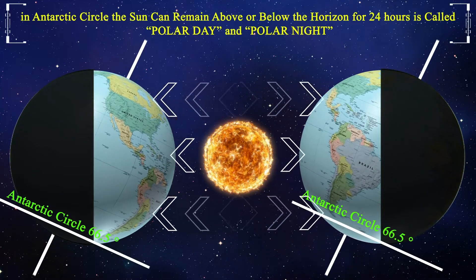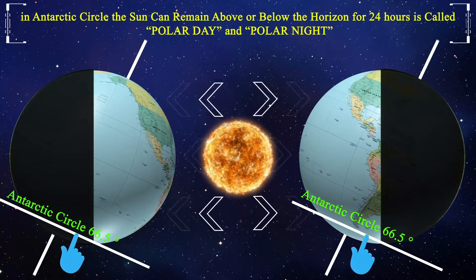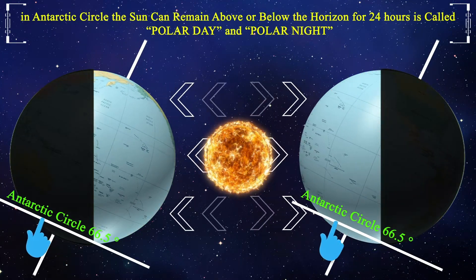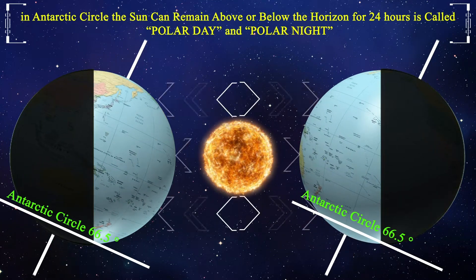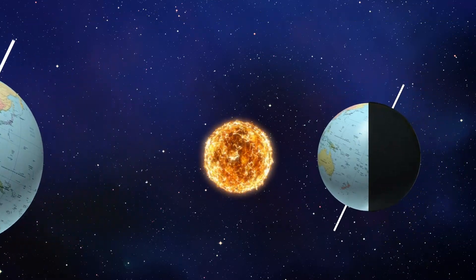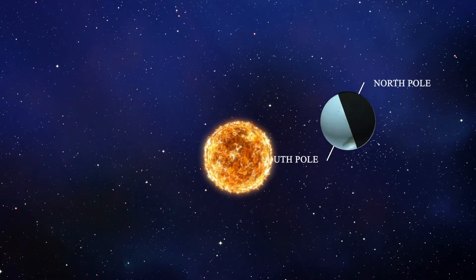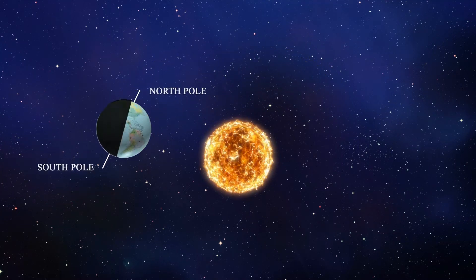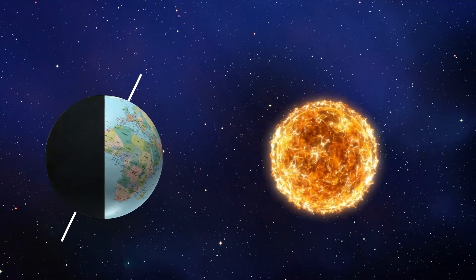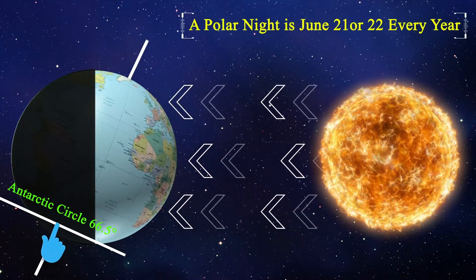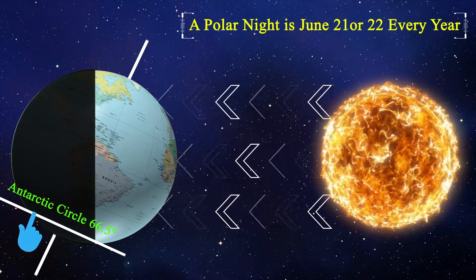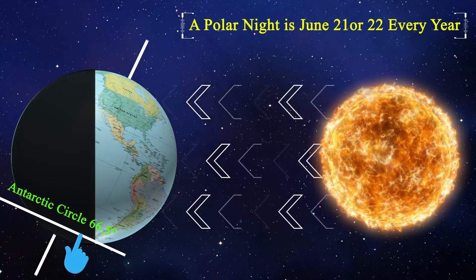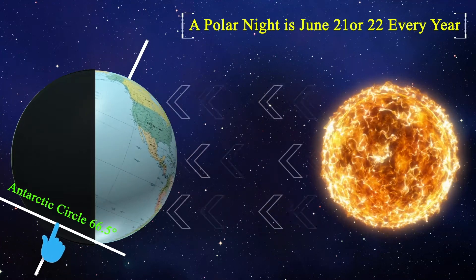In the Antarctic Circle, the sun can remain above or below the horizon for 24 hours — this is called polar day and polar night. Polar night is 24 continuous hours of darkness; it occurs on June 21st or 22nd every year.